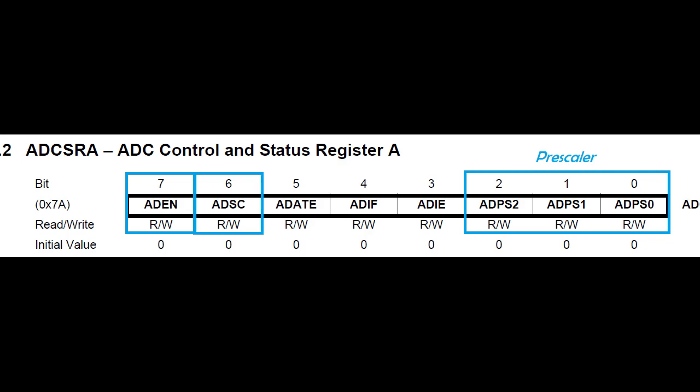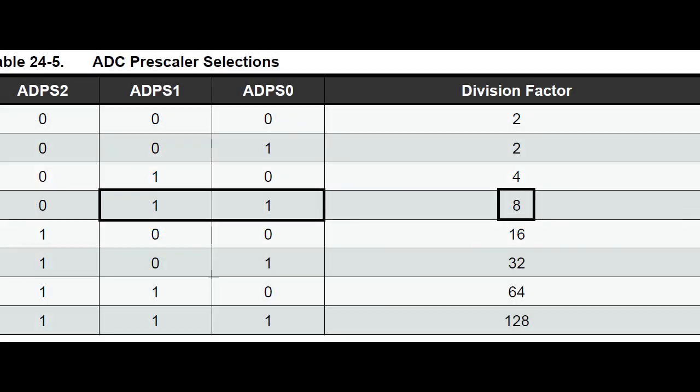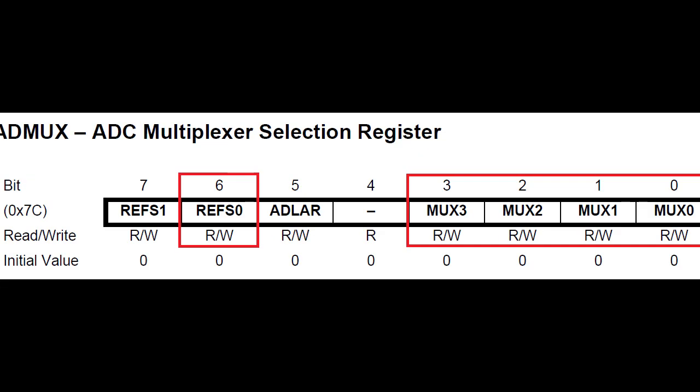The prescaler will be set to 8 like this. Lastly, we have the ADMUX. The ADMUX allows you to select the ADC channel itself. We'll be using channels 1, 3, and 5, and we will have REFS0 turned on as I said before.